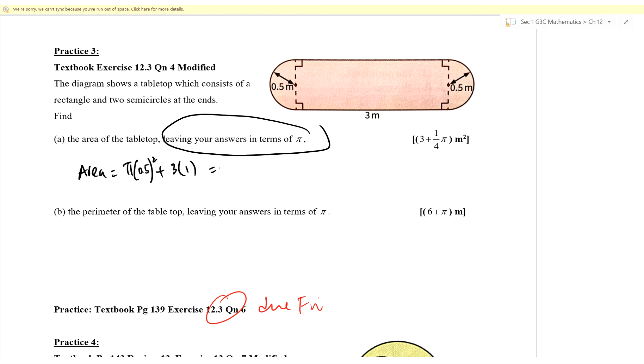Then we add π times 0.5 square, close the bracket, then we add 3. So you see your calculator giving you this: 3.785. You think you have this as the final answer already. But you look at the question, leaving answers in terms of π. Then how are we going to convert this back to in terms of π? It's going to be very difficult. In fact, almost impossible for you to really work backwards to get it in terms of π.